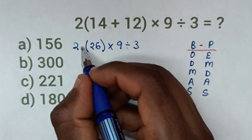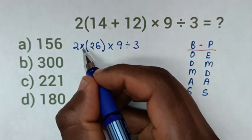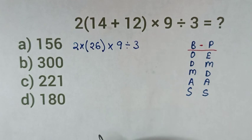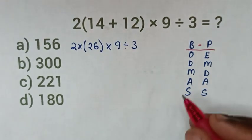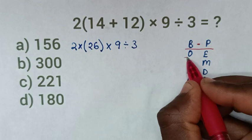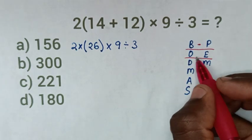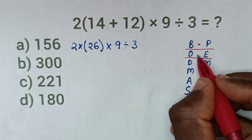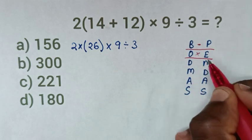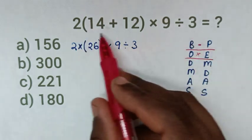In the next step from our rule, we have order or exponent, which are the same thing. In here, we don't have order or exponent in this problem.